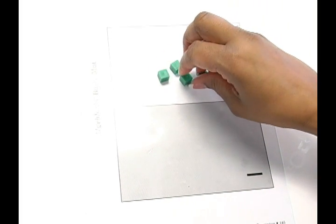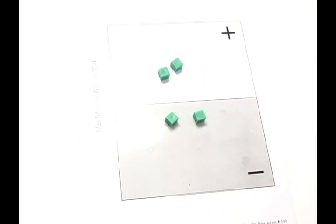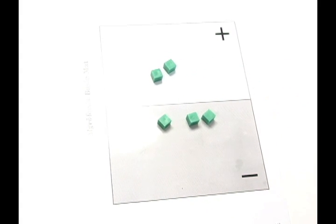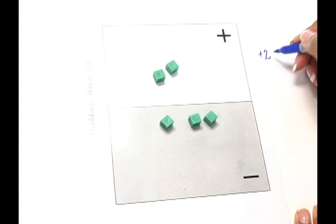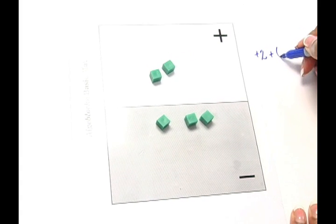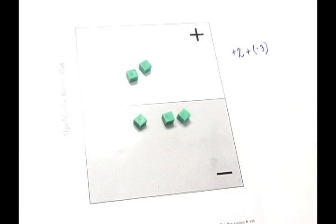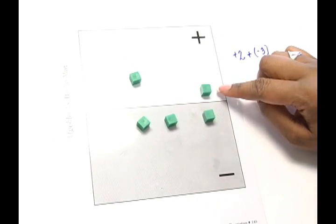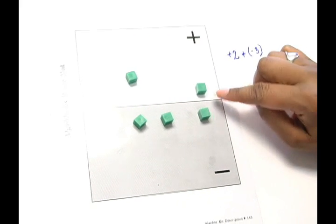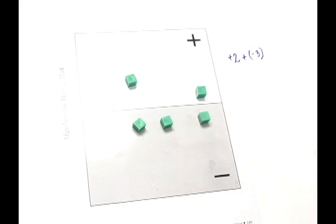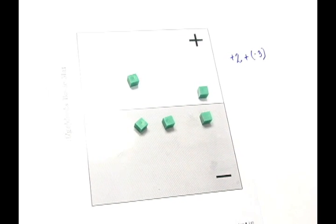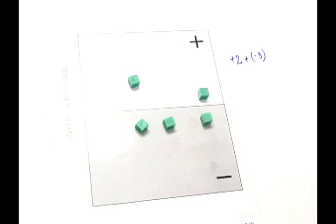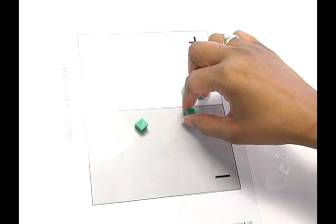One of the things that we do with algae blocks is model addition and subtraction of integers. So let's model a problem. If we wanted to add a positive 2 and a negative 3, one thing that our students would do is clearly recognize that these two units are equal to zero because they're opposites, a positive 1 and a negative 1. With algae blocks, we refer to those as zero pairs.